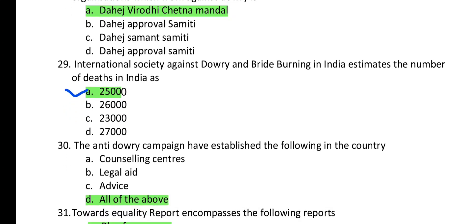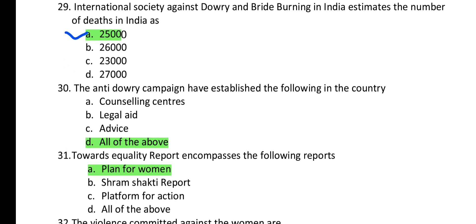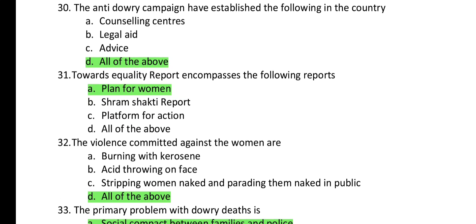Question 29: The International Society Against Dowry and Bride Burning in India estimates the number of deaths in India as 25,000. Question 30: What have the anti-dowry campaigns established in the country? They have established counseling centers, provided legal aid, and advice. The answer is D — all the above.